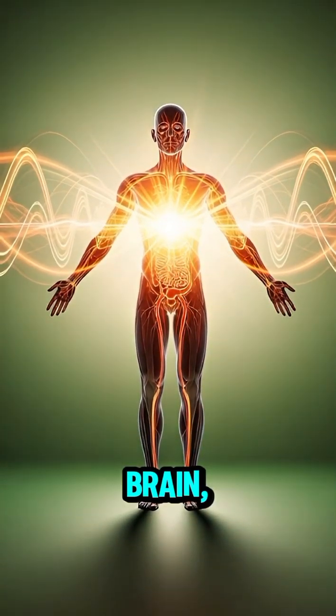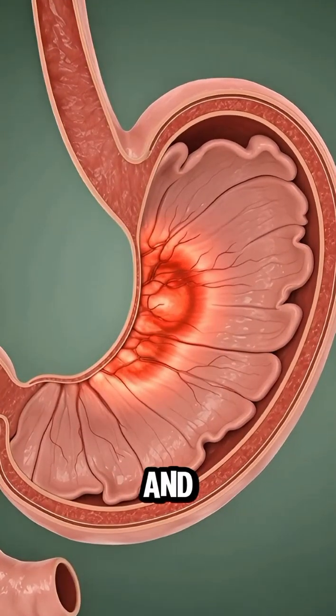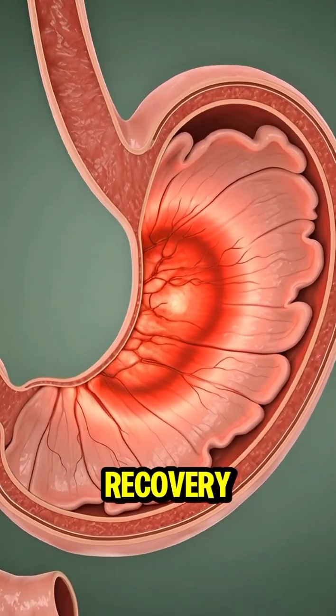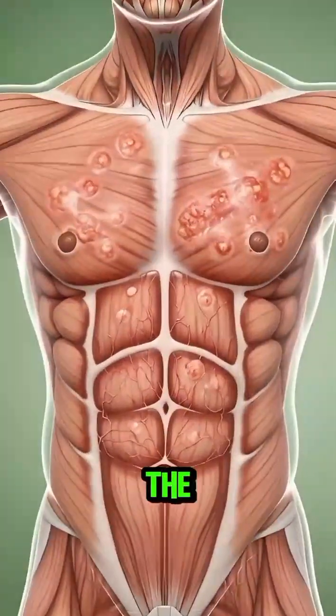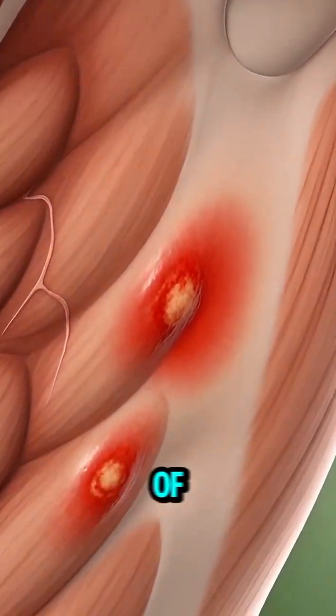Inside the brain, antioxidants support active neurons, helping with focus and mental clarity. In the muscles, nutrients assist recovery and strength. And in the gut, papaya supports a healthy microbiome, the foundation of overall wellness.